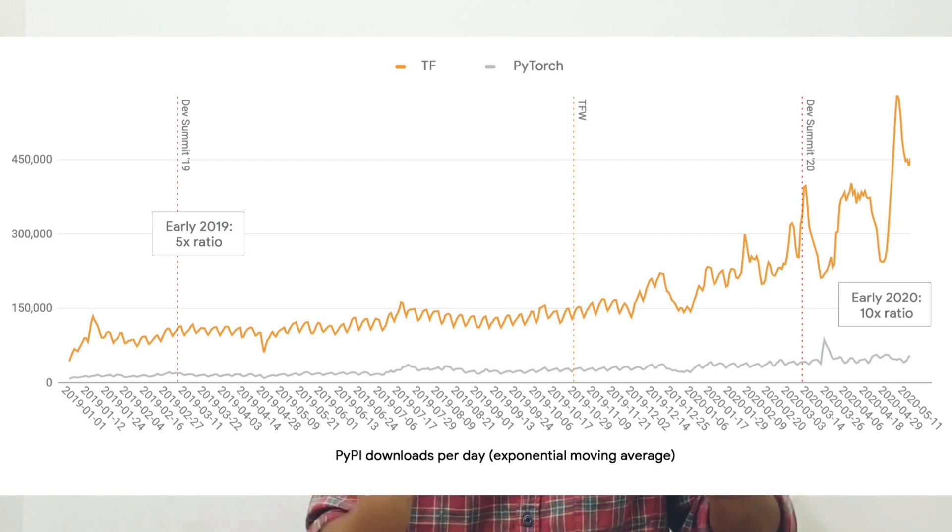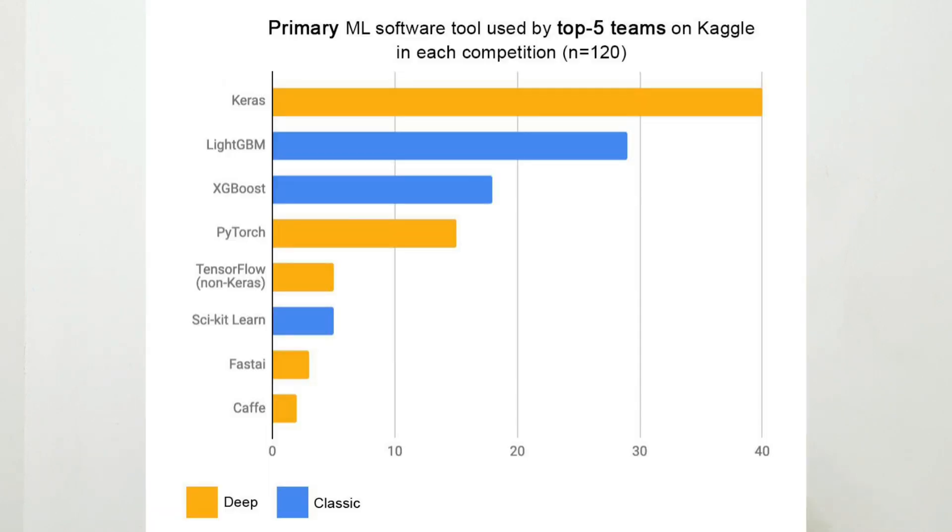The second reason is that because of this developer-friendliness, people adopt Keras. There is data that right now in 2020 there are around 375,000 developers who actively use Keras, and that is a big number for a deep learning framework. Another mind-blowing data point: in every Kaggle competition they surveyed, the top 5 winners were asked which library they used, and Keras was at number one.